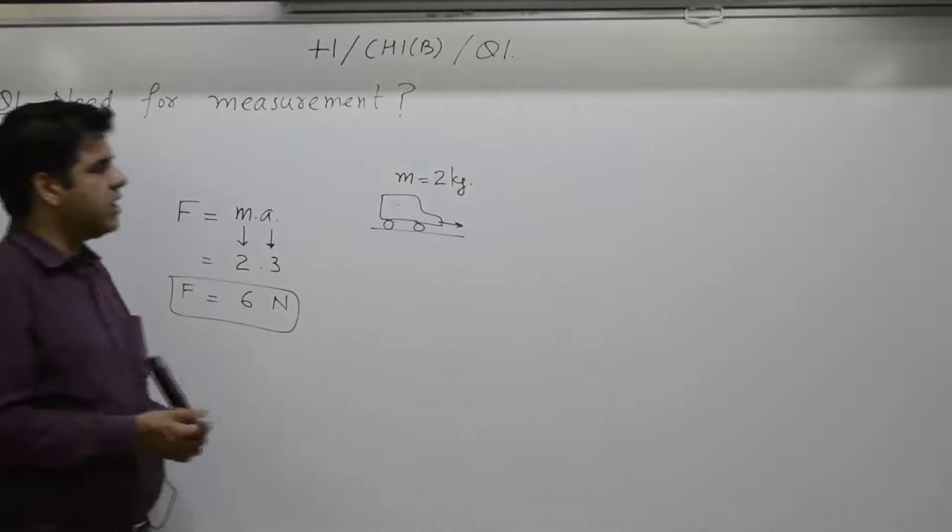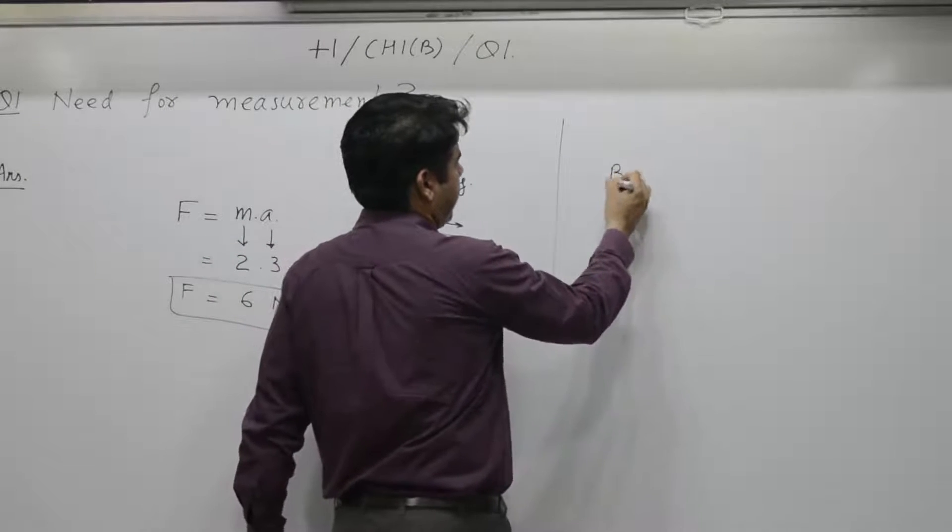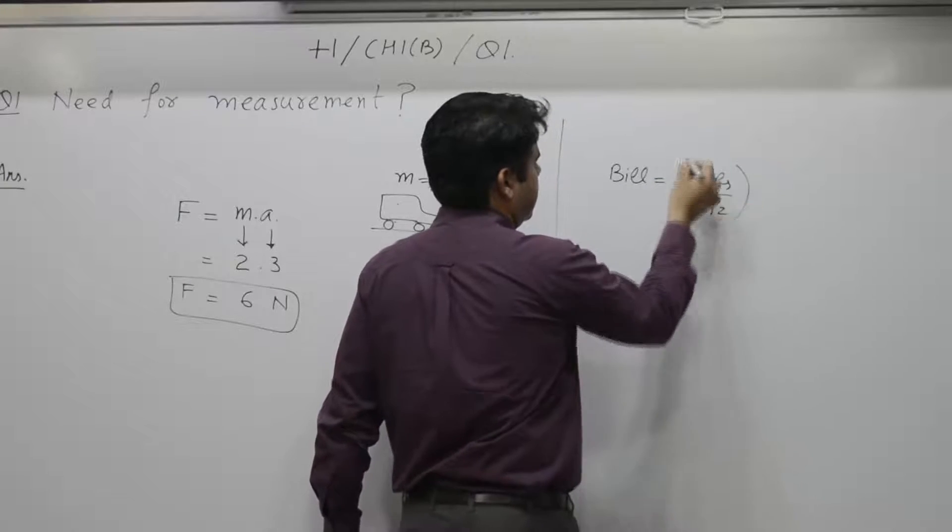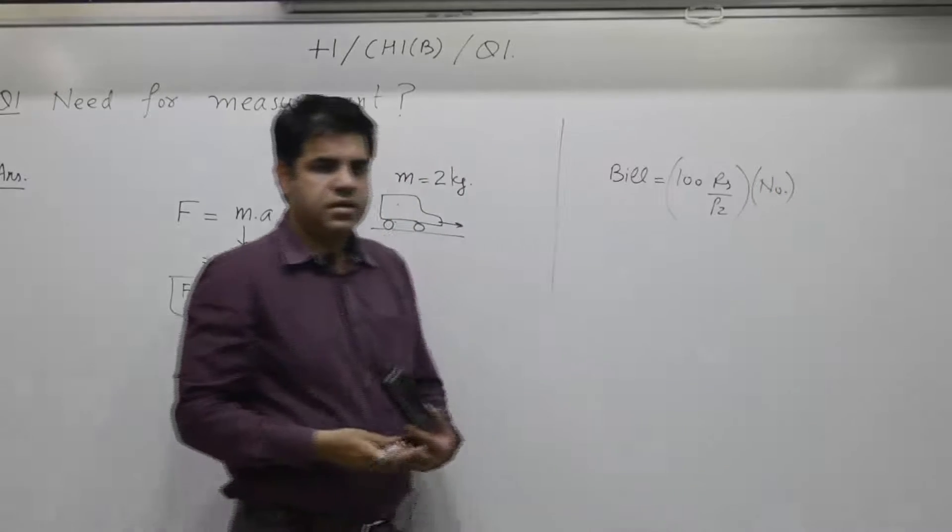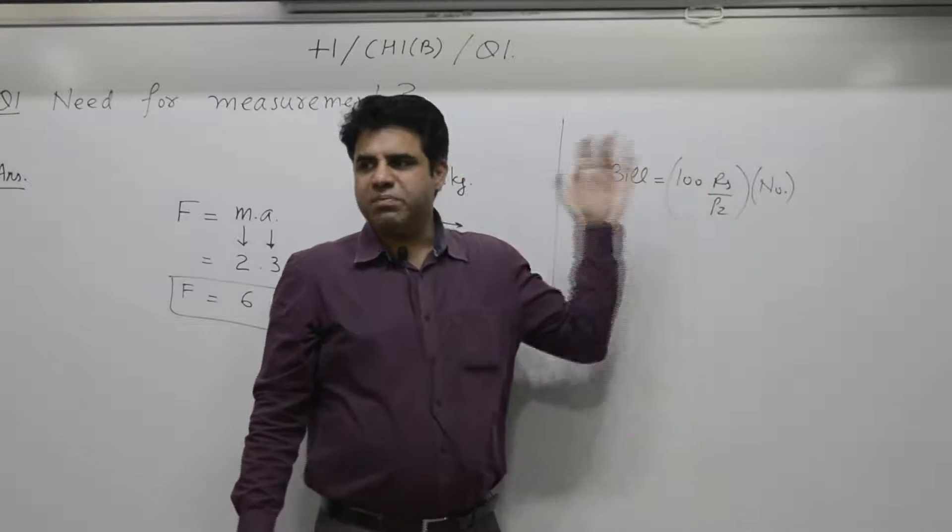Equivalent example is when you say bill is equal to 100 rupees per pizza into number of pizzas. In case you don't have this data, if the price per pizza is not known, then the bill cannot be made.